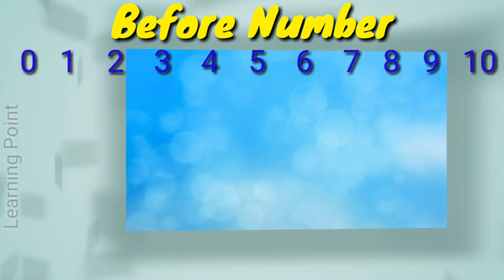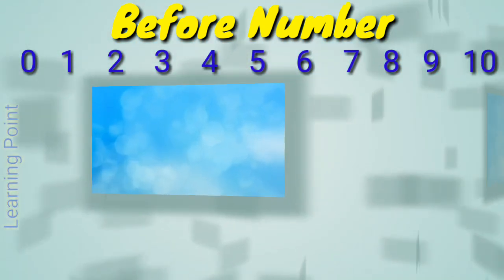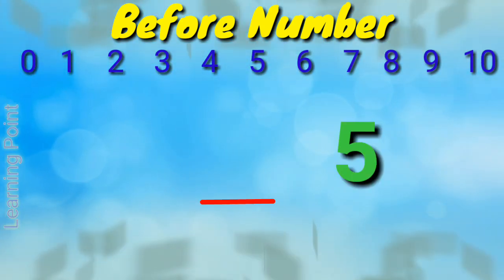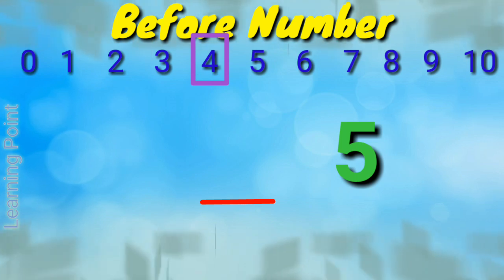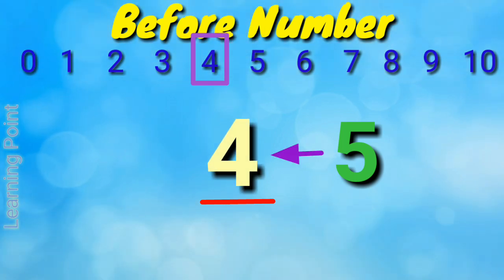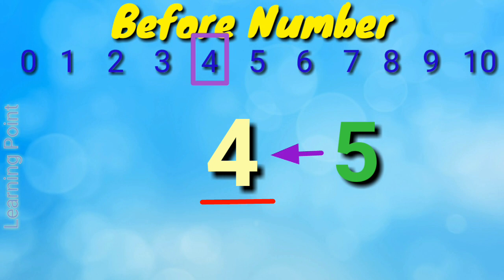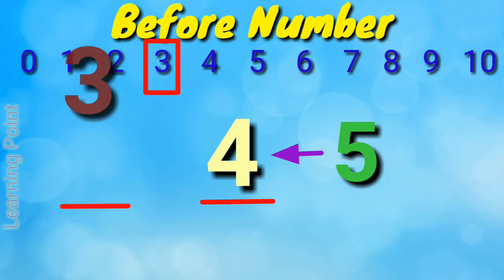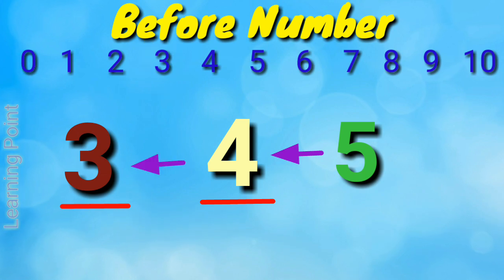You tell me which number will come before number 5? That is number 4. 4 is before number 5. Before number 4, which number will come? That is number 3.